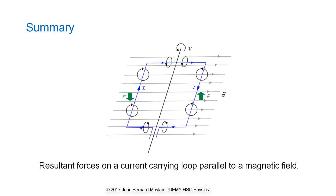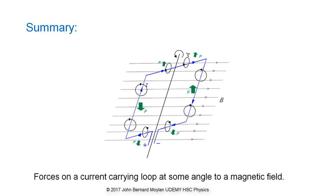Summary: When a current carrying loop is parallel to an external magnetic field, forces are generated on the sides of the loop which are at 90 degrees to both the current direction and the direction of the magnetic field. When the loop is at an angle to the field, the forces on the sides remain at 90 degrees to both the current direction and the magnetic field, and forces are also generated on the ends of the loop which are parallel to the axis of rotation.